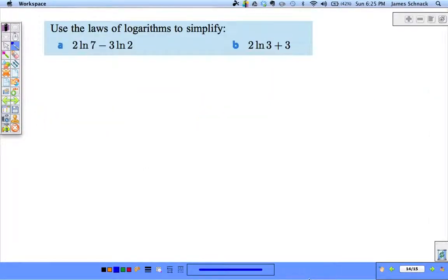Next ones: use the laws to simplify this. All right, hopefully you gave them a try. Natural log of 49 minus natural log of 8. These combine together to become natural log of 49/8. Done.